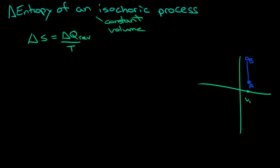Now, to calculate the change in entropy of an isochoric process, first off, we have to know, it's very simple. All we have to know is what equals the delta Q.